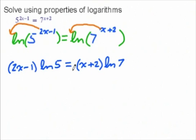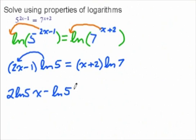To solve for x, we need to get rid of these parentheses. So we're going to distribute the ln of 5 on the left and the ln of 7 on the right. And we're going to end up with an ugly expression, which is 2 times ln of 5 times x. That would be from here, ln of 5 times 2x. And then minus ln of 5, that ln of 5 times that negative 1, is equal to...